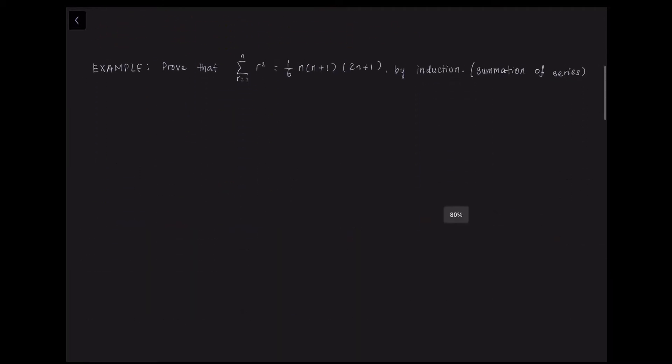So let us see how to prove a formula relating to the summation of series using proof by induction. So the question asks us to prove that the sum of R squared is equal to 1/6 times N times (N+1) times (2N+1) by induction. So the first step is to define the proposition.